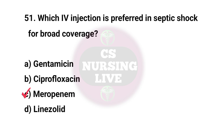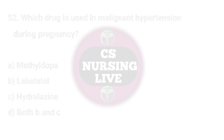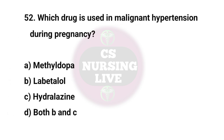Question No. 52. Which drug is used in malignant hypertension during pregnancy? Right answer is D. Both B and C.